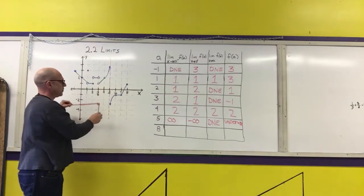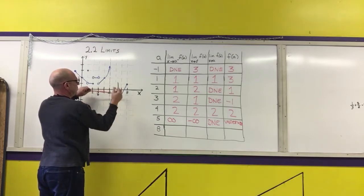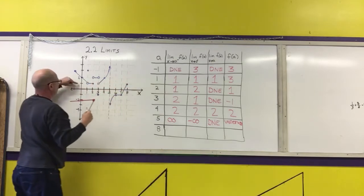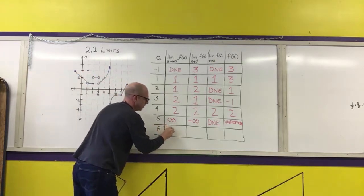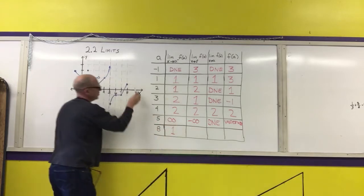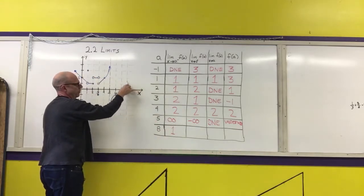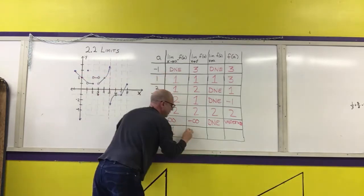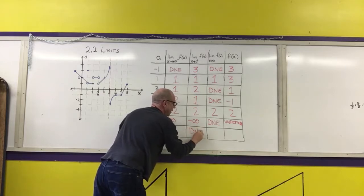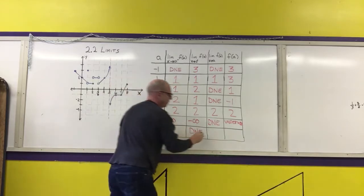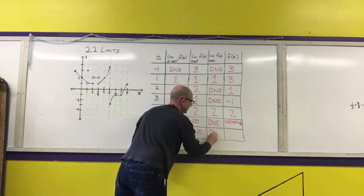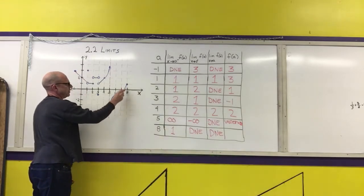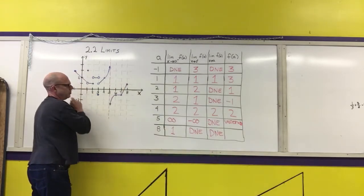For x = 8: following the graph along the x-axis, the y-value approaches 1 from the left. Because there is no way to come in from the right along the graph, the right-side limit does not exist. Because these are different, the two-sided limit does not exist. Evaluating the function at x = 8 gives a value of 1.